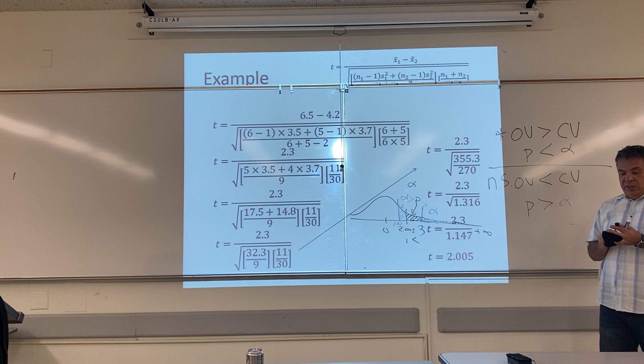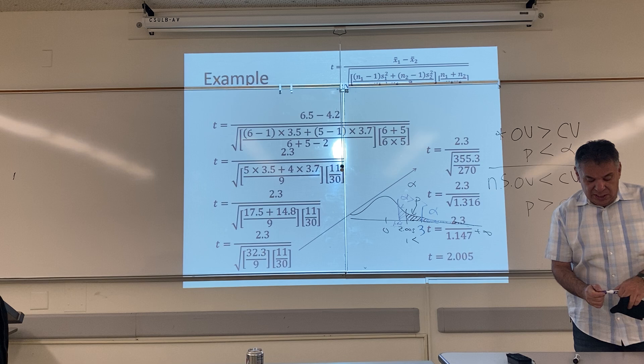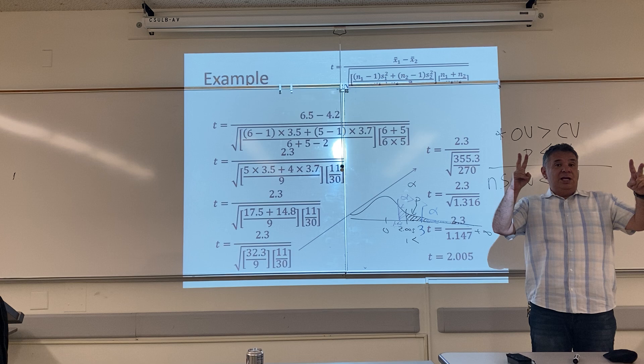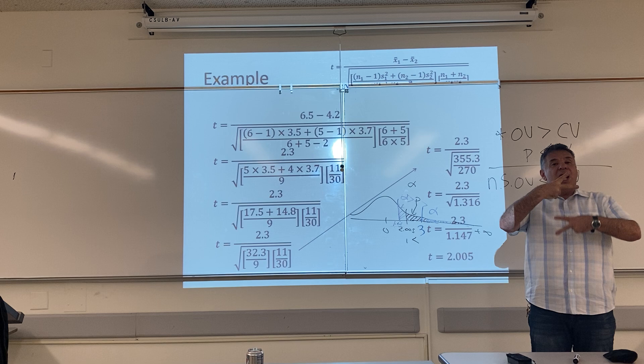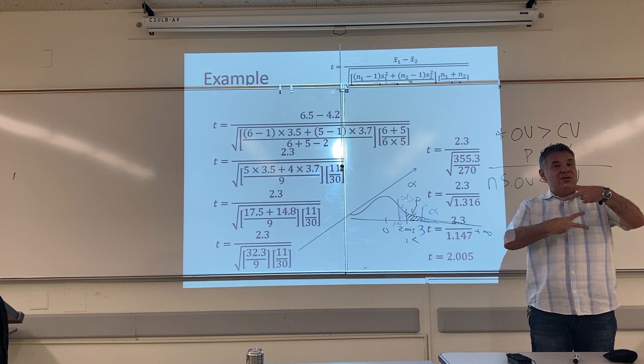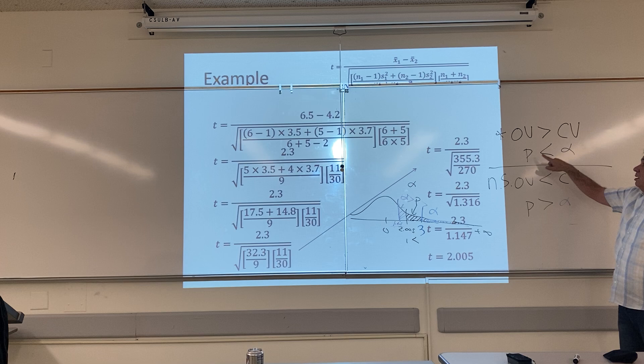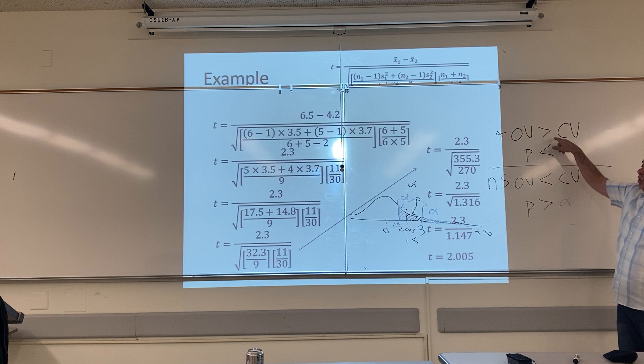How can I remember this? I'll teach you a mnemonic. Stick up two peace signs and go like this — whatever's happening here, the opposite is always happening here. So if the OV is more extreme than the CV, P is smaller than alpha. If the OV is not more extreme than the CV, P is greater than alpha. They're always in opposite directions.